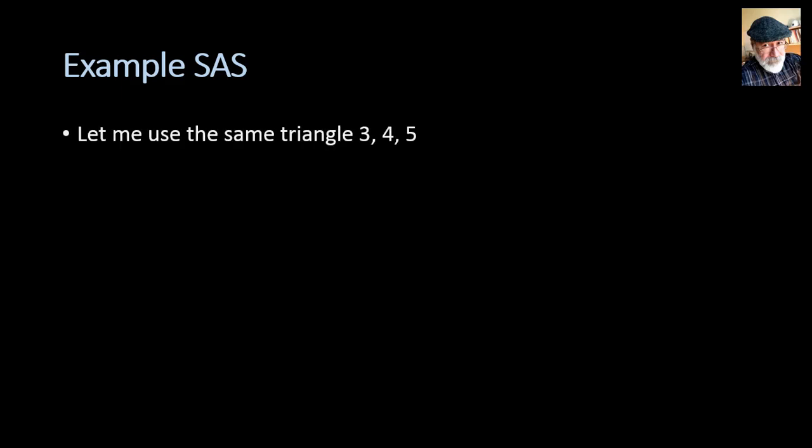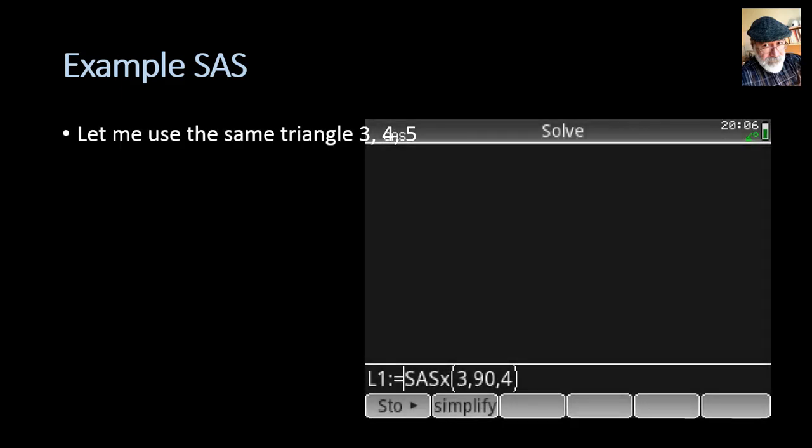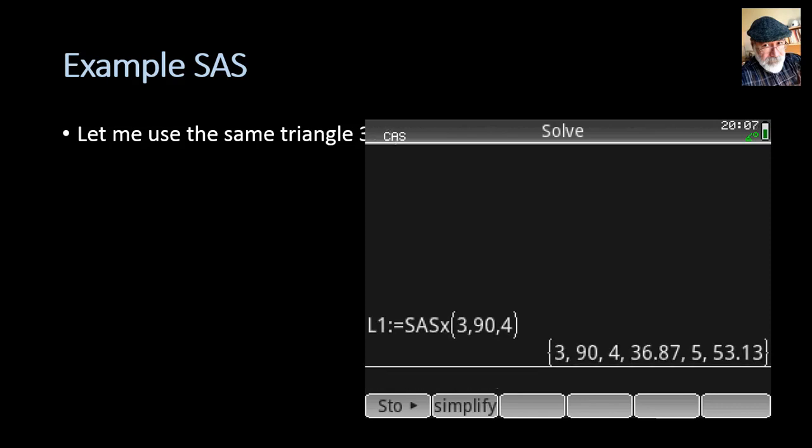An example with SAS. Let me use the same triangle 3, 4, 5, and say, hey, show me the triangle 3, 90, 4. Two sides and the angle between them, and put the result in the list variable L1. There. That is our triangle. We know 3 and 90, 4, 37, 5, and 53 degrees.